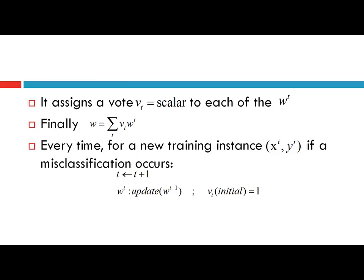The learning rule is the same: for a new training instance xi, yi, if a misclassification occurs, the new weight vector wt is given by wt = wt-1 + yi * xi. The additional feature is that a vote vt for weight vector wt is initialized as 1. If the current weight vector wt correctly classifies training instance xi, yi, then no update to the weight vector is made. Instead, the vote for wt is increased by 1.